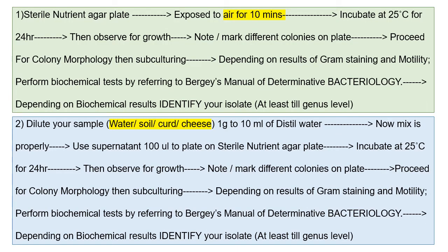If you are using air as your sample, the procedure is: use a sterile nutrient agar plate, expose it to air for 10 minutes, then incubate at 25 degrees Celsius for 24 hours, and observe for growth. Note or mark the different colonies you observe on your plate. Then proceed for colony morphology and subculturing. Depending on the results of Gram staining and motility, perform biochemical tests by referring to Bergey's Manual of Determinative Bacteriology. Based on biochemical results, you can identify your isolate — at least to genus level, which is expected during practicals.